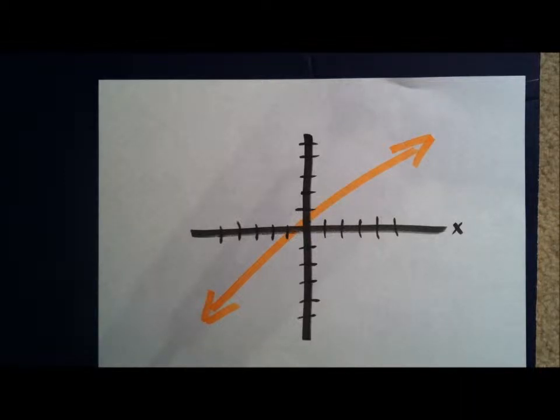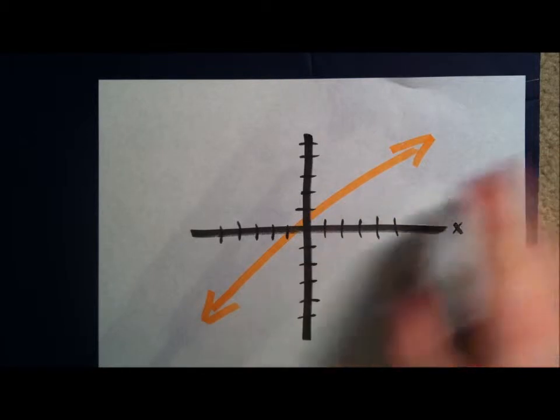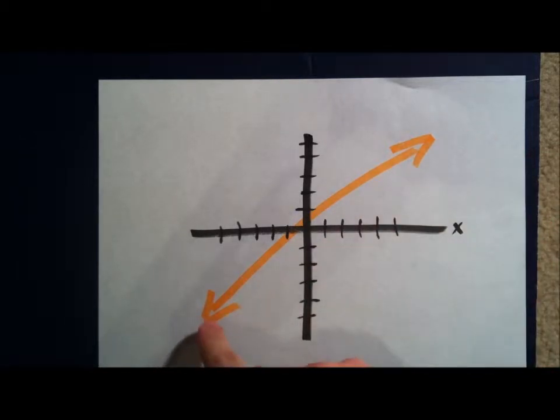So, this is lesson 42, where we talk about how to tell whether a graph is increasing, decreasing, or remaining constant. Now, to start with, here you have a line. It goes infinite in both directions, represented by these arrows.